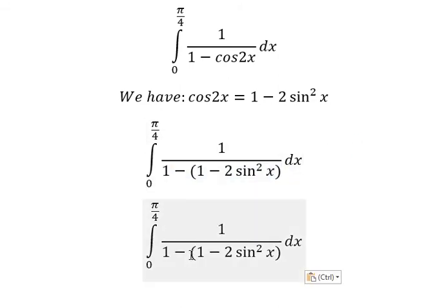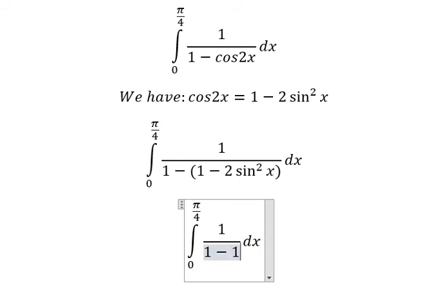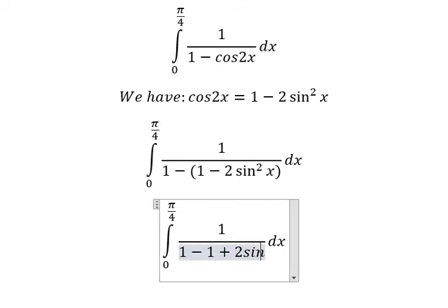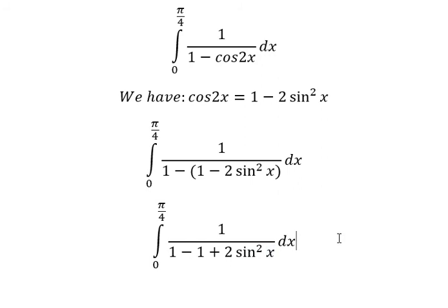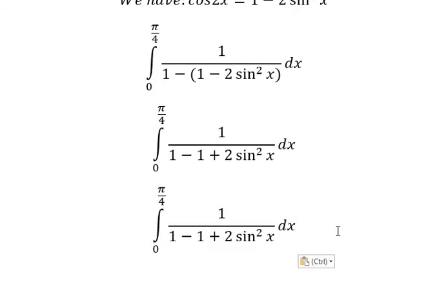We open the parenthesis, so we get -1 + 2sin²x. One minus one will simplify.